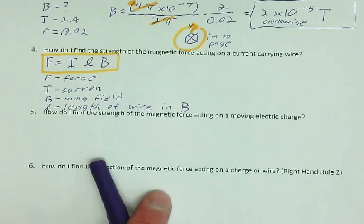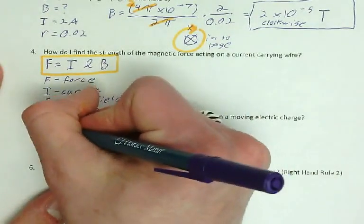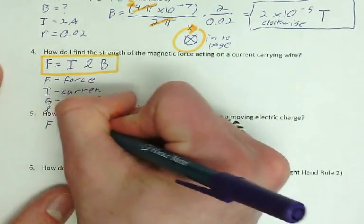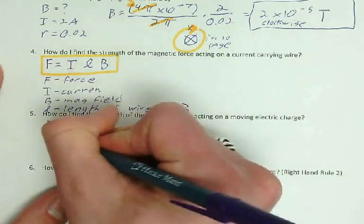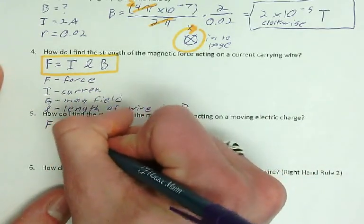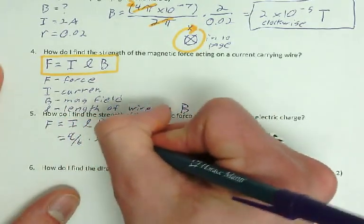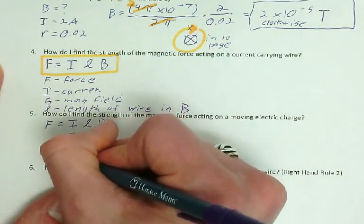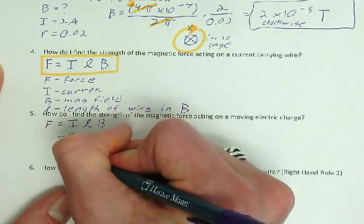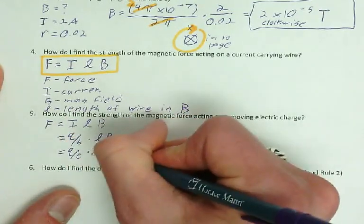Okay? So how do I find the strength of the magnetic field on a moving electric charge? So what if it's not a current? What if it's one charge? Well, the equation was F equals I L B. But I is the rate at which charge flows. So I can rewrite this as Q over T times L times B. And length is really just a distance that the charges travel. So I can rewrite this as Q over T times D times B.